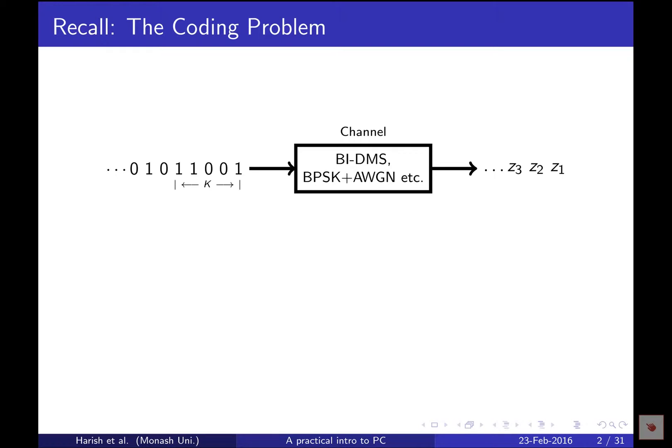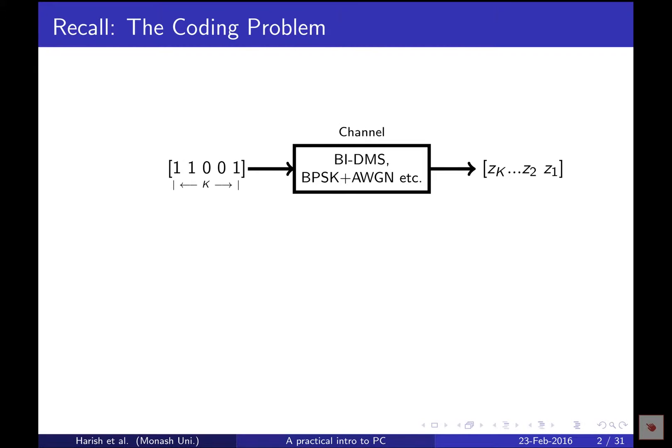Shannon says we can actually improve the system's performance — improving both the quality and the rate of transmission simultaneously — by using something more intelligent. We pre-process and post-process the information we transmit. If you consider k bits as a block, you can transmit these k bits through the channel and receive k noisy versions. This uncoded system has a fixed performance with no variable of intelligence involved.